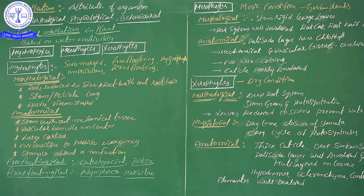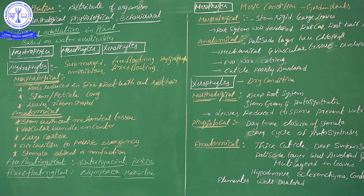These adaptations may be morphological, physiological, or behavioral adaptations. Especially in this video, I would like to discuss ecological adaptations in plants. Plants are of different types based on their ecosystem. Based on the location of plant growth, the majority of plants are classified into several groups: hydrophytes, mesophytes, and xerophytes.